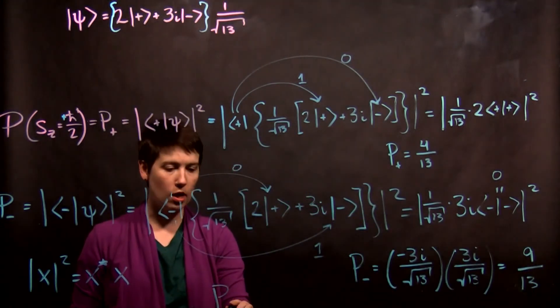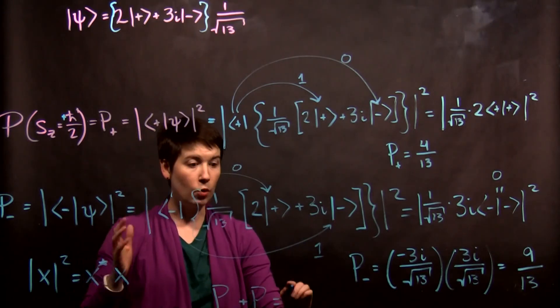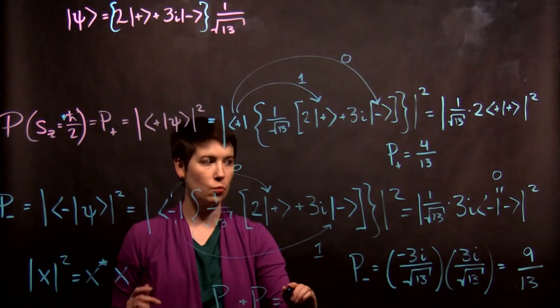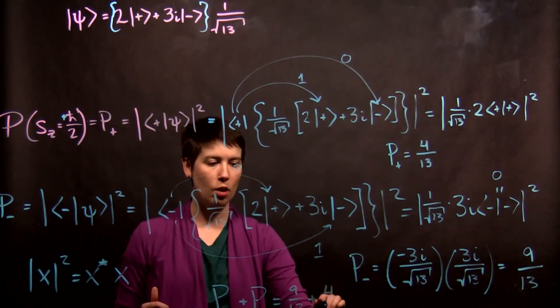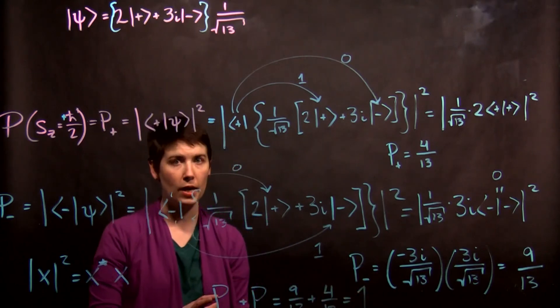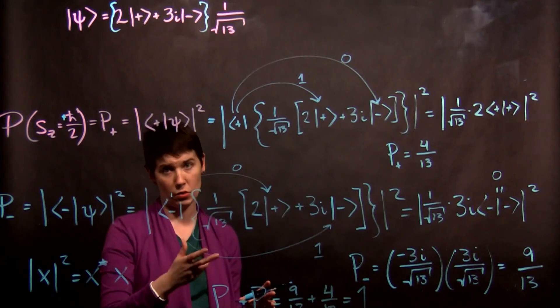So this is good, we expect that our two possible options, spin down and spin up, should equal 100%. And in this case, we see that we have 9 thirteenths plus 4 thirteenths probability, so that equals 1, exactly as we expect. So this is our spin one-half system that only has two possible measurements.